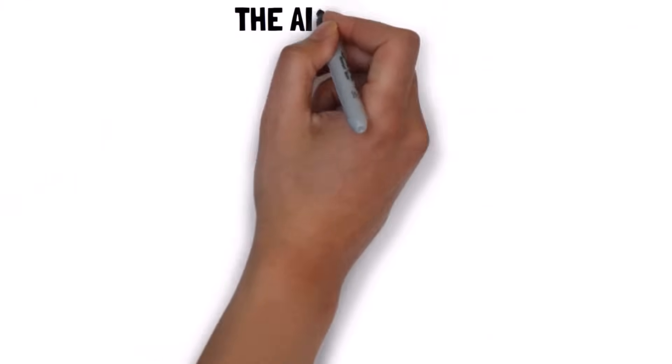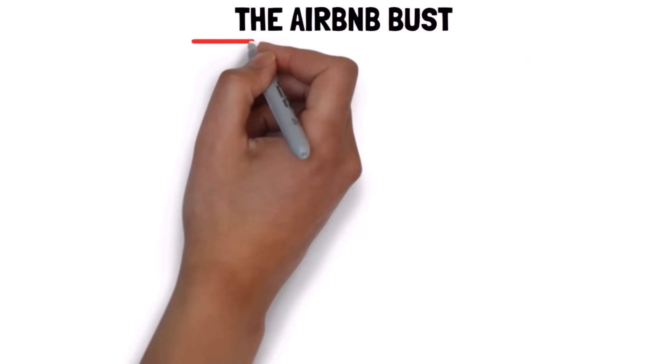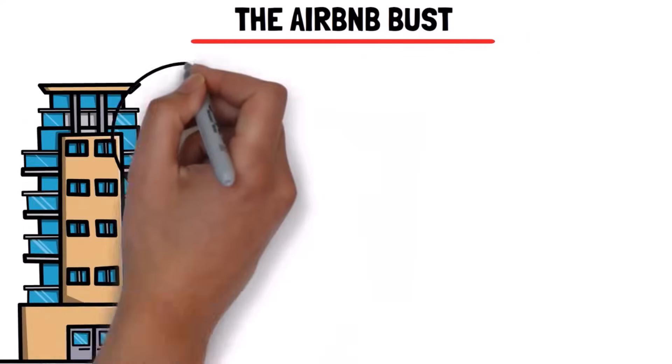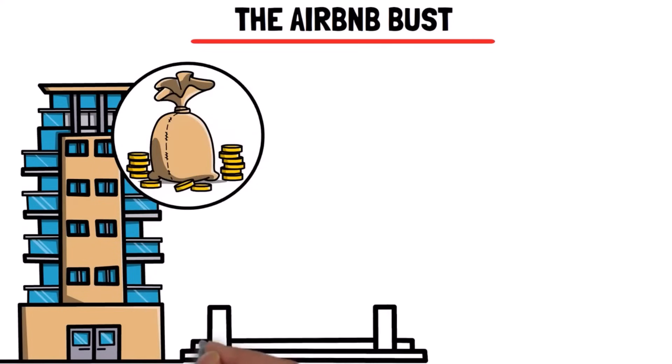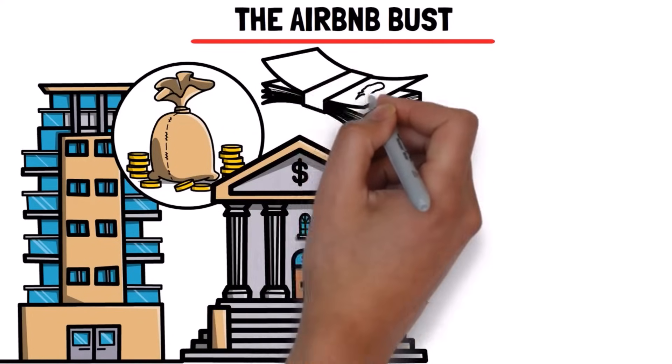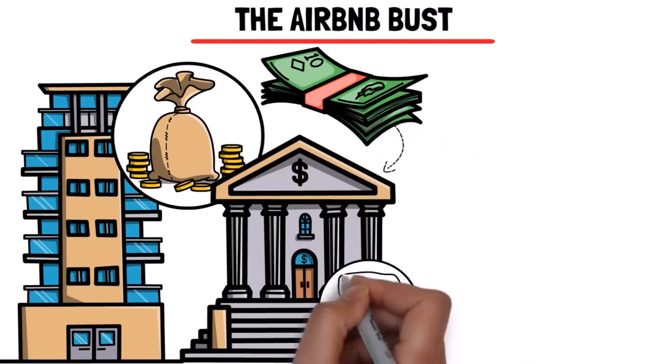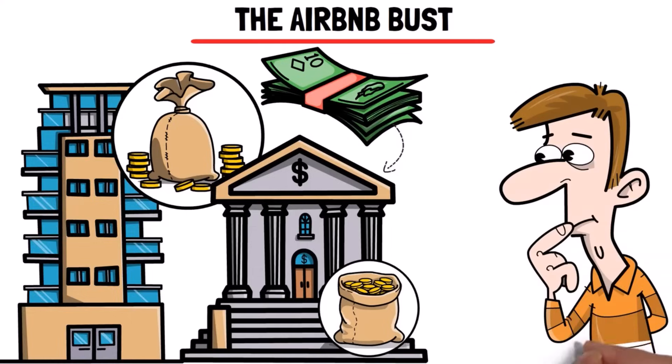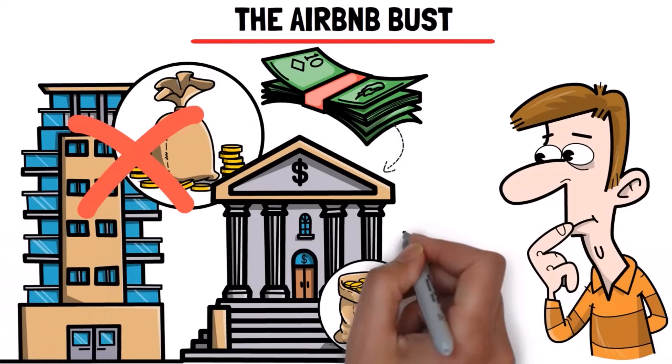Now, let's talk about the third issue, the Airbnb bust. People rushed to buy properties for Airbnb, hoping to make a lot of money. They used special loans that let them pay only the interest. But now, they have to pay back the loans, and they can't refinance like they thought. So they're stuck with properties that are not making them the money they expected, and they're losing value.